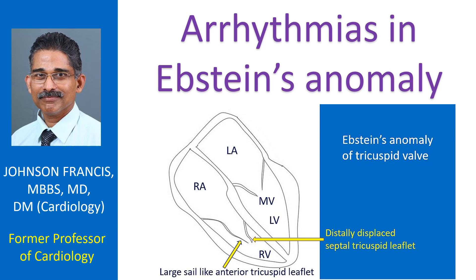Other types of arrhythmias seen in Epstein's anomaly include ectopic atrial tachycardia, atrial flutter, intra-atrial re-entrant tachycardia, atrial fibrillation, and ventricular tachyarrhythmia.